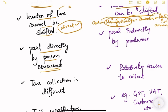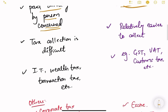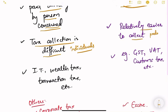In direct taxes, tax collection is difficult because it has to be collected from individuals. In indirect taxes it is relatively easier to collect because it is collected from producers - one producer can pay on behalf of lakhs and crores of people together.